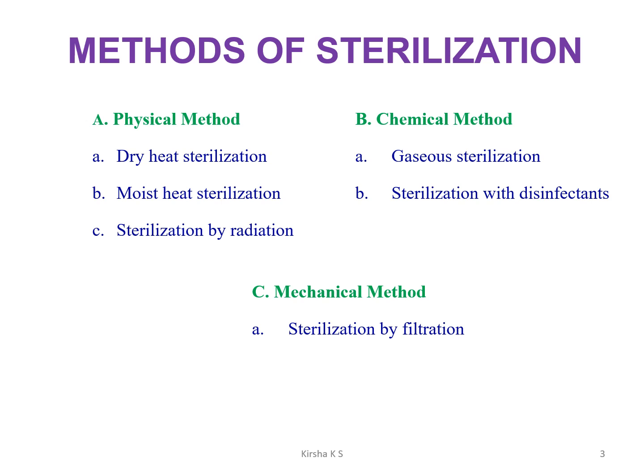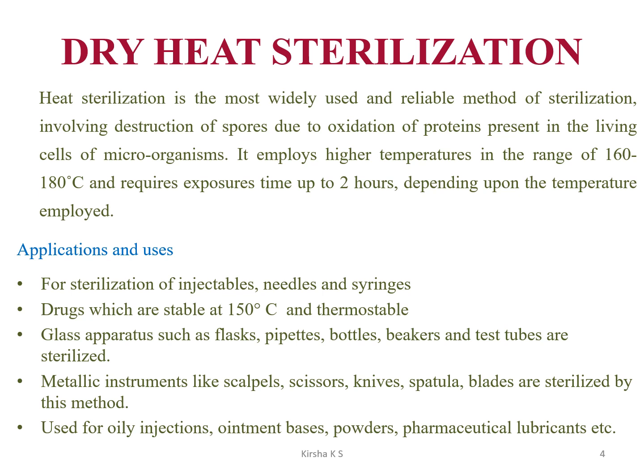Today we are discussing dry heat sterilization, which is a most widely used method. The mechanism involves destruction of spores through oxidation of proteins present in the living cells of microorganisms. Applying high temperature causes oxidation of proteins, thereby destroying the bacterial spores and killing the microorganism.